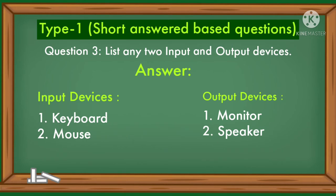List any two input and output devices. Two input devices are keyboard and mouse, and two output devices are monitor and speaker.